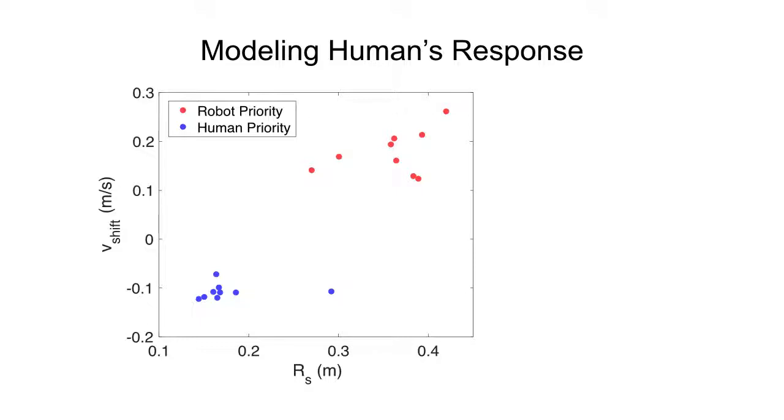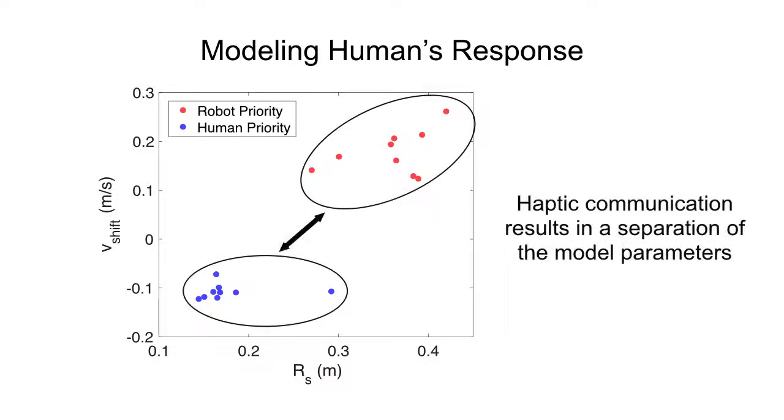The parameters used in the social force model were learned from experimental data. An interesting result we find is that haptic communication shifted some of the parameters into distinct clusters, which indicates that users altered their strategies according to communication.